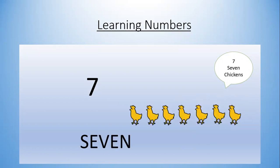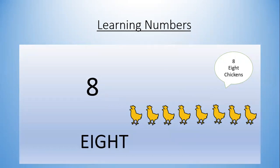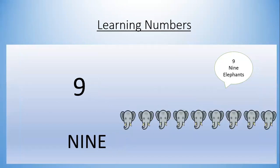Seven: one, two, three, four, five, six, seven — seven chickens. Eight: one, two, three, four, five, six, seven, eight — eight chickens. Nine: one, two, three, four, five, six, seven, eight, nine — nine elephants.